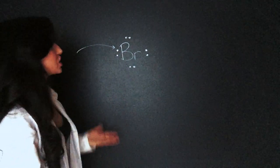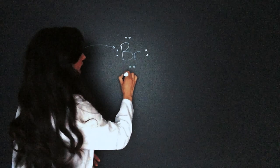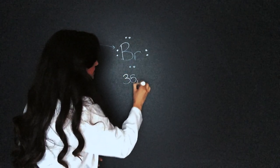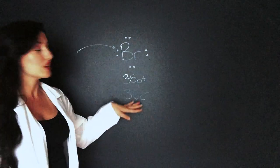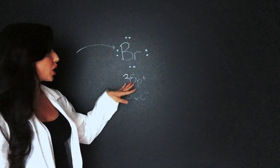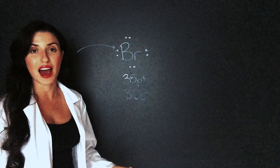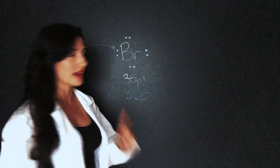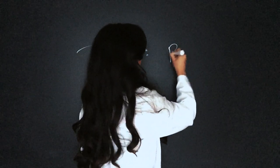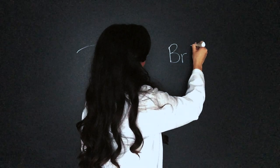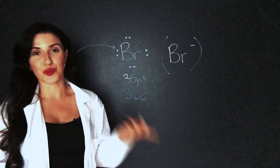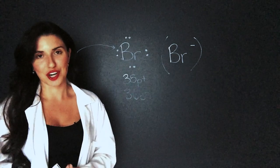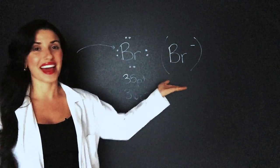But now bromine with an atomic number of 35 has 35 protons but 36 electrons. There's one more electron than there are protons, which means it's going to have a negative charge of one. So we write it like this. Bromine negative. We don't have to put the one when it's only one negative charge. And now we have an anion.